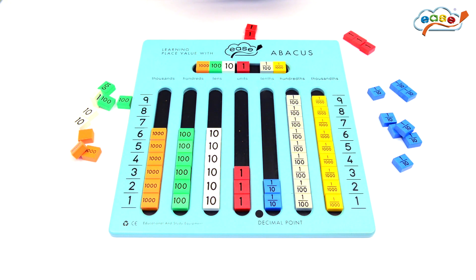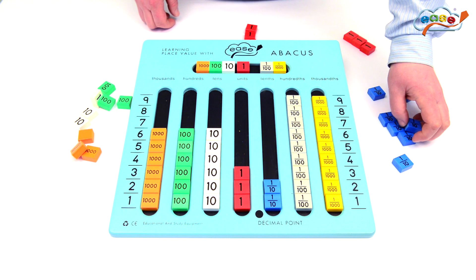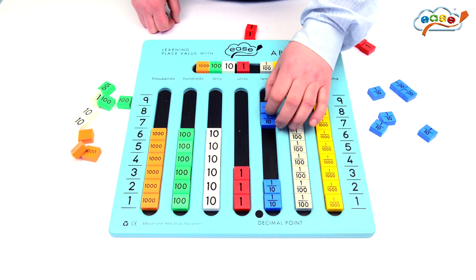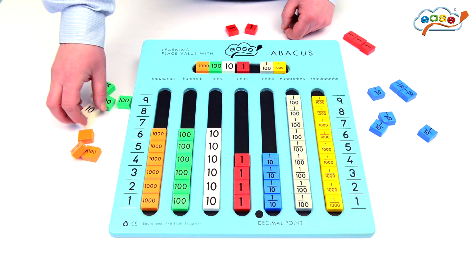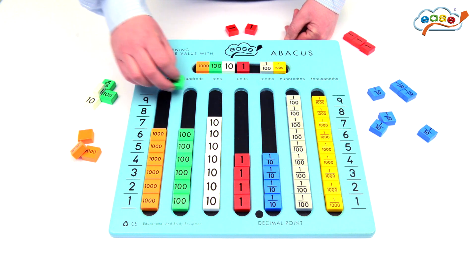And then if we want to add, for example, one hundred and eleven point two, that's made up of two tenths, one unit, one ten, one hundred.